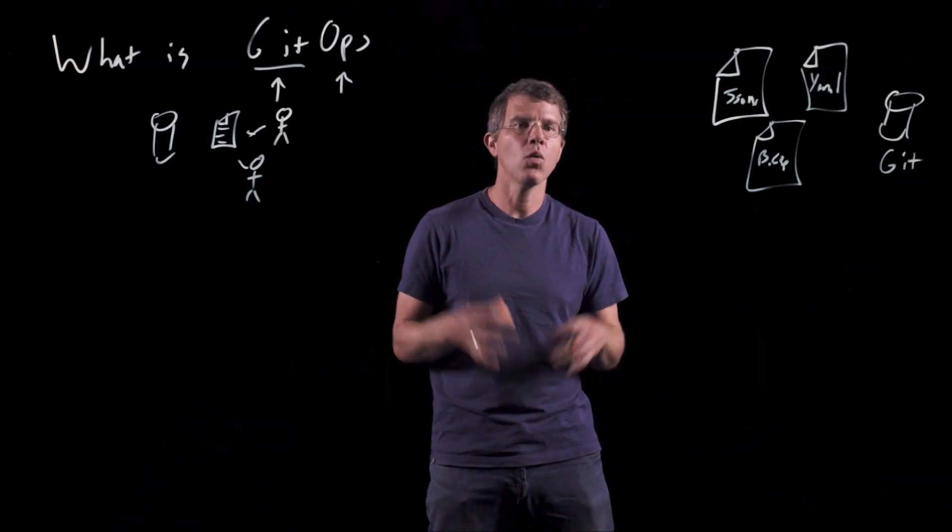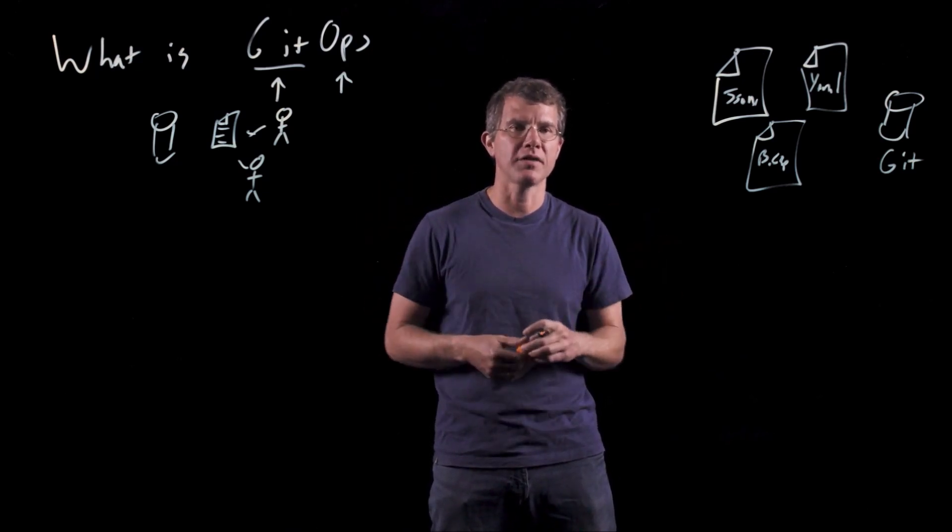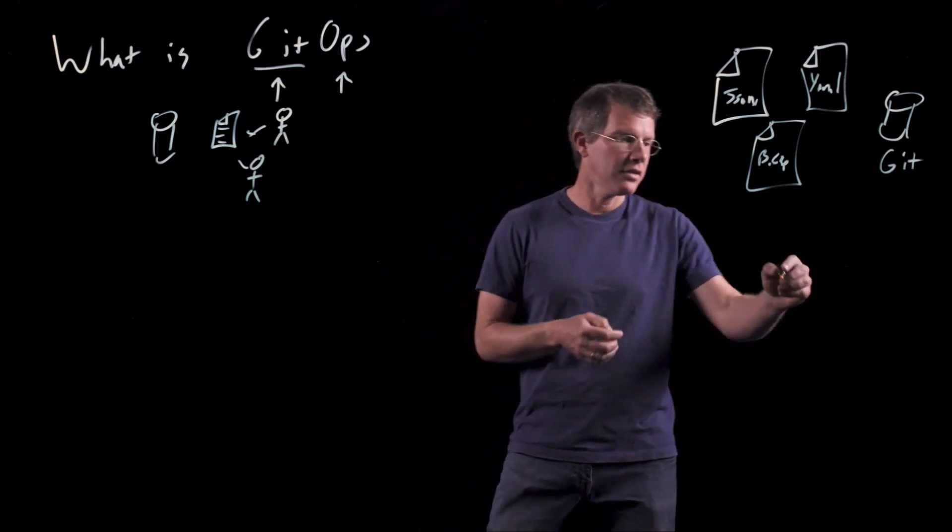So you're probably familiar with taking these infrastructure as code text files and pushing them into a Git repository. Once you do that, you can turn it into a GitOps repository by adding automation.